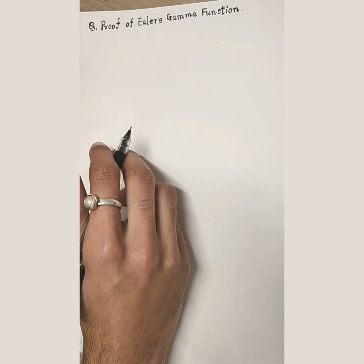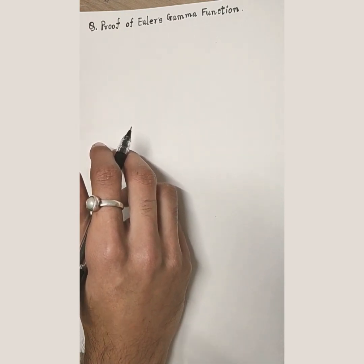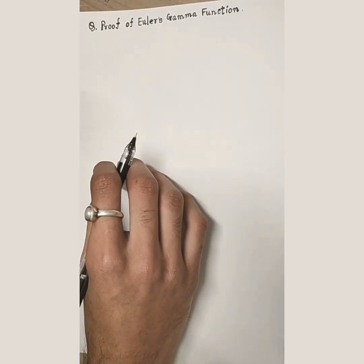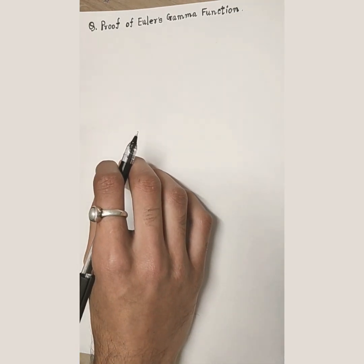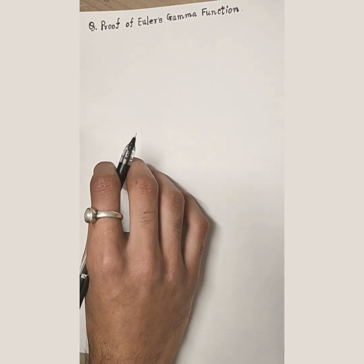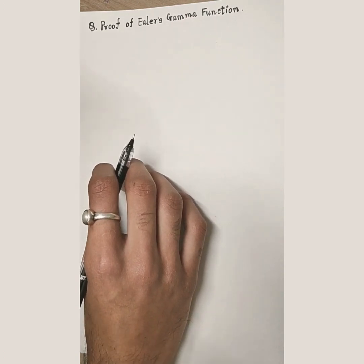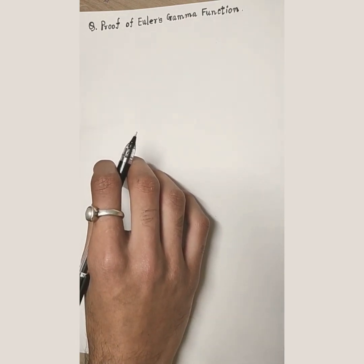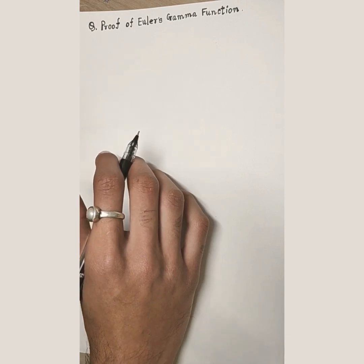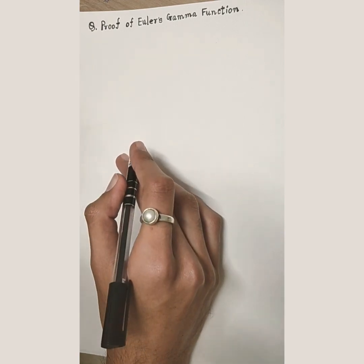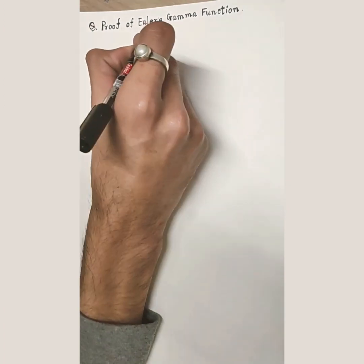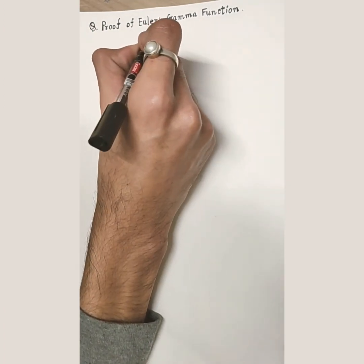If you recall, in the month of December we actually used Euler's gamma function to prove that 0 factorial is equal to 1. At that time I said we would be proving Euler's gamma function, which I had just given as an expression. So let's first recall what Euler's gamma function was.